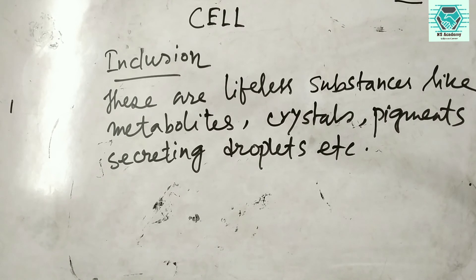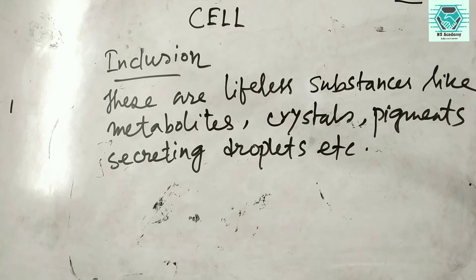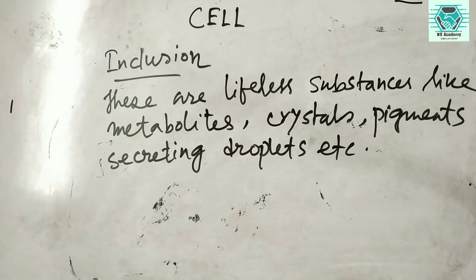Inclusions are also present in the cytoplasm. These are non-living substances like metabolites, carbohydrates, proteins, crystals, pigments, and secreting droplets. They are opposite from organelles — organelles are living substances whereas inclusions are lifeless substances.